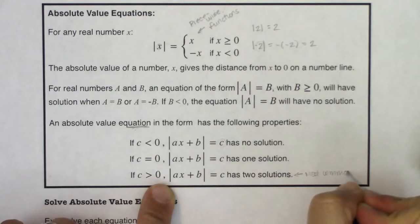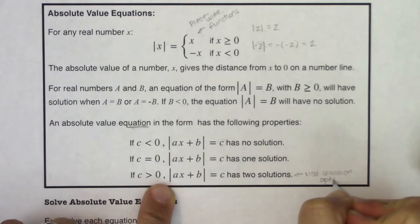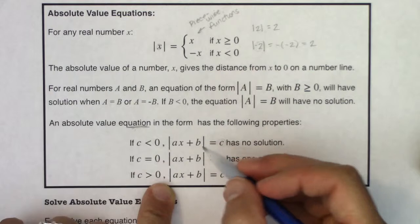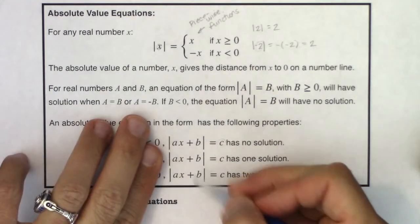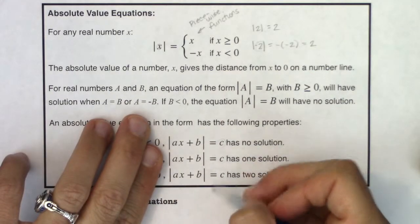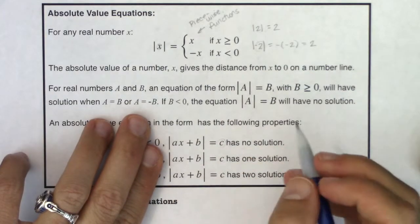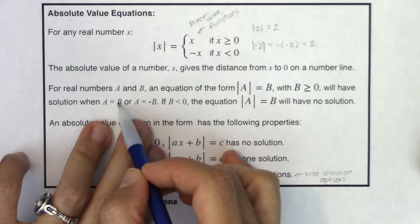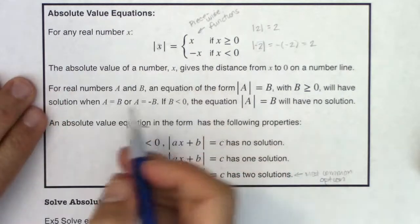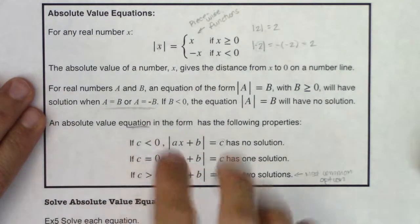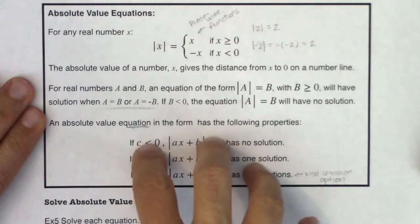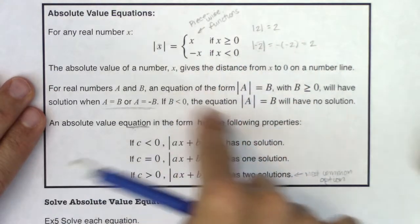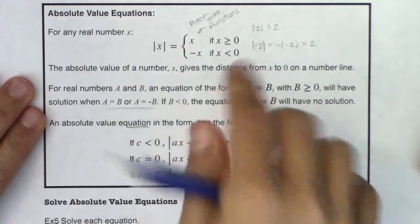It won't happen all the time — there are two other options. But the most common one is when you have a positive number on the right side, giving two solutions. When you have an equal sign with absolute values, you set up two equations: a equals b, and a equals negative b. That method changes in section 2.7 when we get the less-than and greater-than versions.